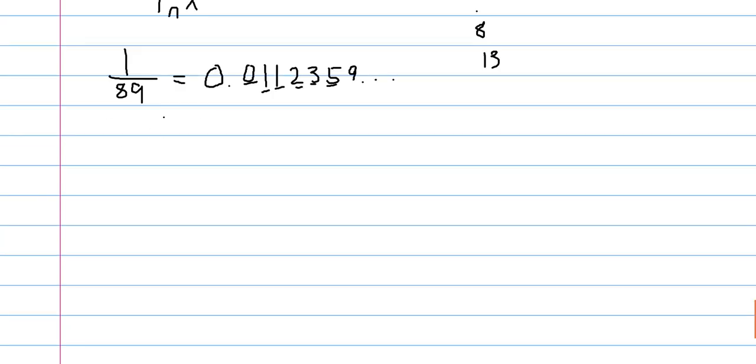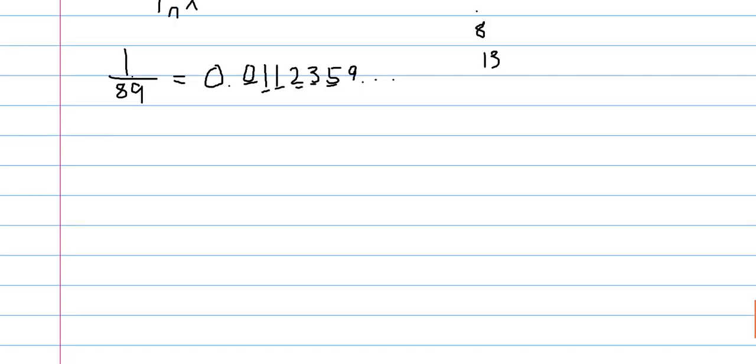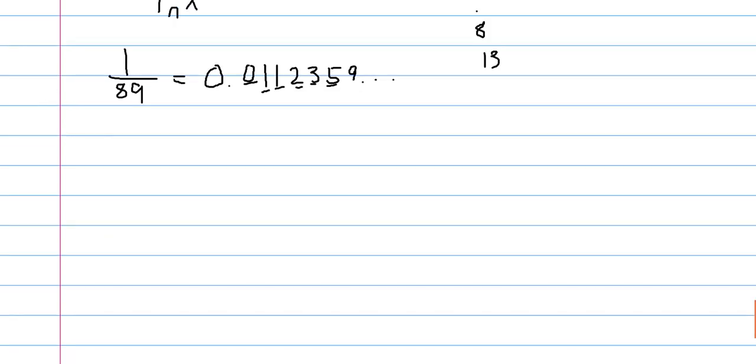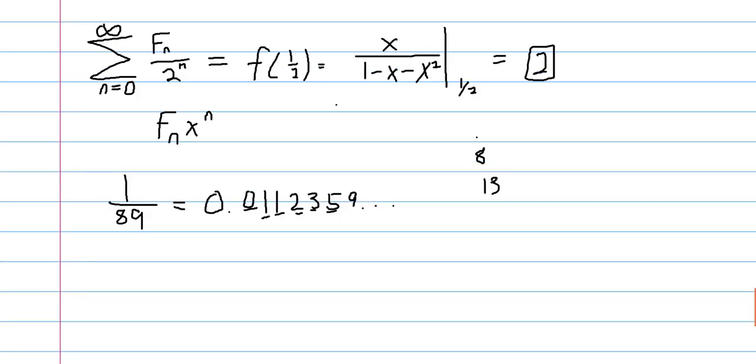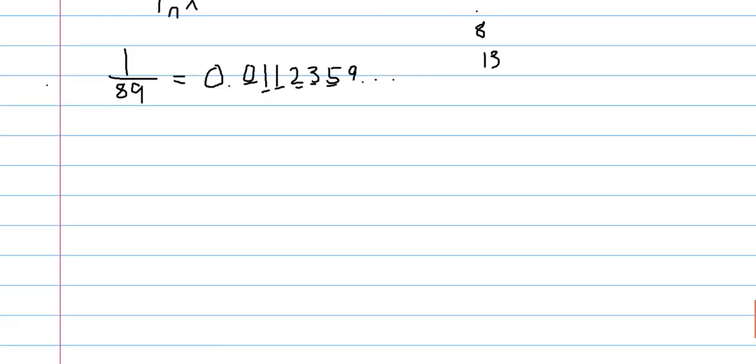But we want to prove that this is actually equal to, or that we're getting this fraction from Fibonacci numbers. So what is this? If each Fibonacci number is taking up its own decimal place.